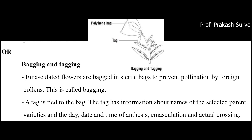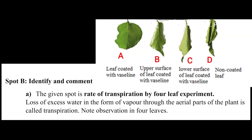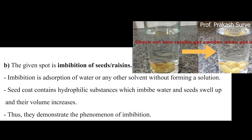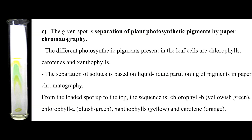Next is spot B, where you have to identify and comment. First may be a transpiration experiment. Second may be imbibition of seeds or resins, or maybe a paper chromatography experiment.